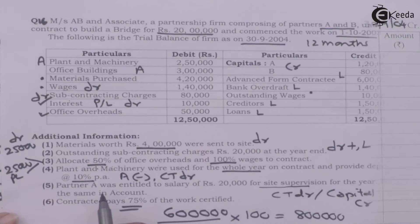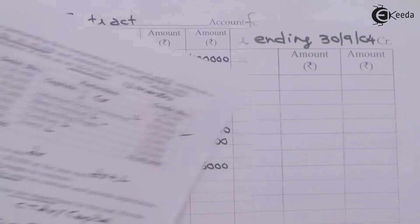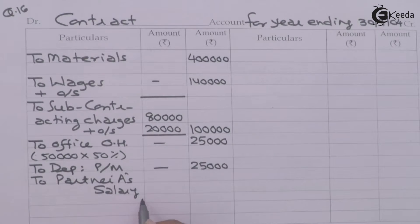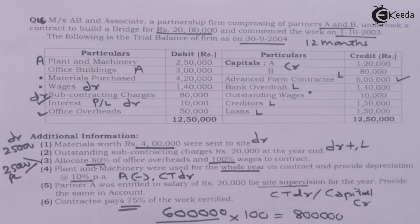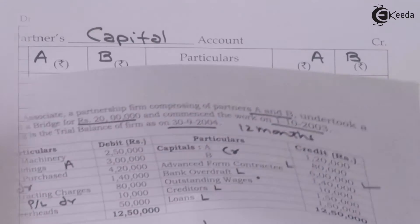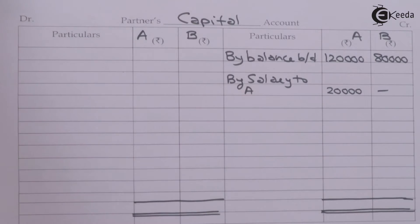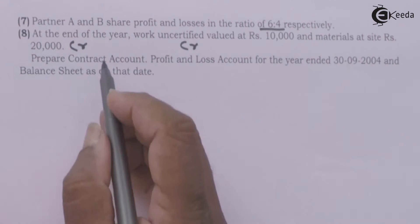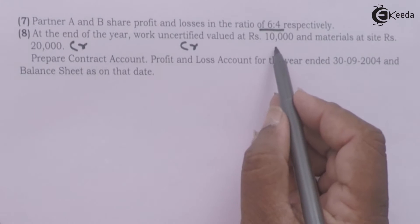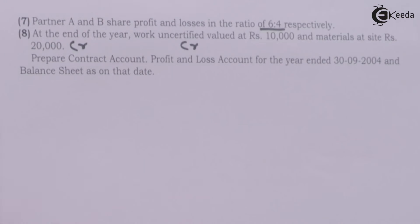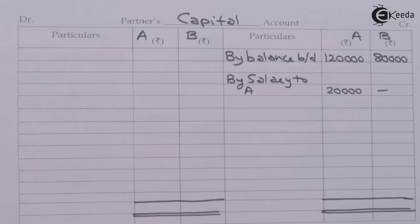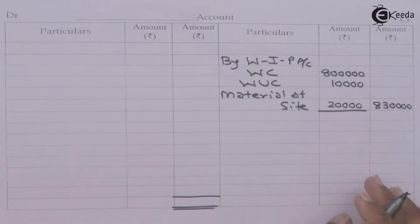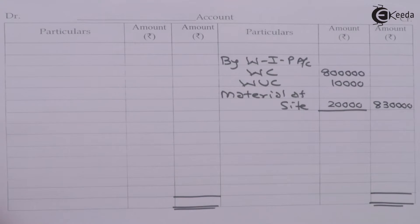Partner A's salary of 20,000 is debited to the contract account. The contractee pays 75 percent of work certified, and we found the value of work certified to be 8 lakhs. Partners A and B share in the ratio of 6:4. At the end of the year, work uncertified value is 10,000 and material at site is 20,000 — both will be credited to the contract account. So the work in progress value becomes 8,30,000. All information given in the question has been recorded.